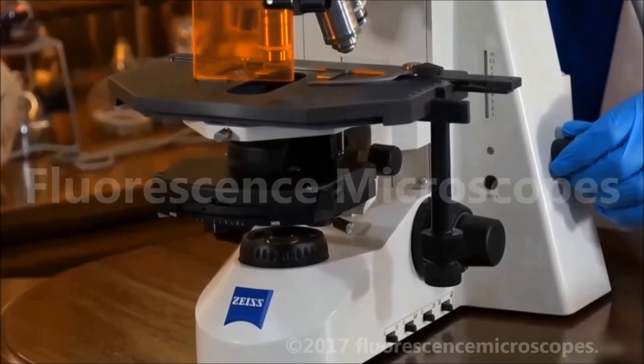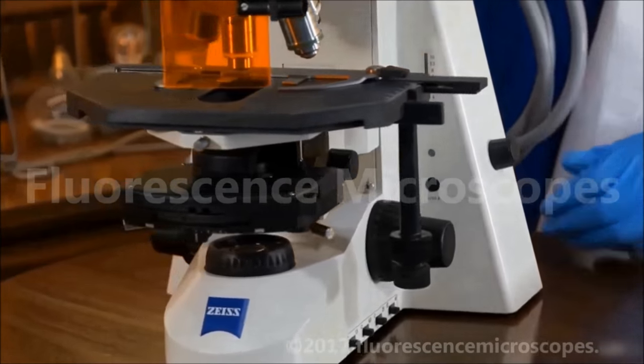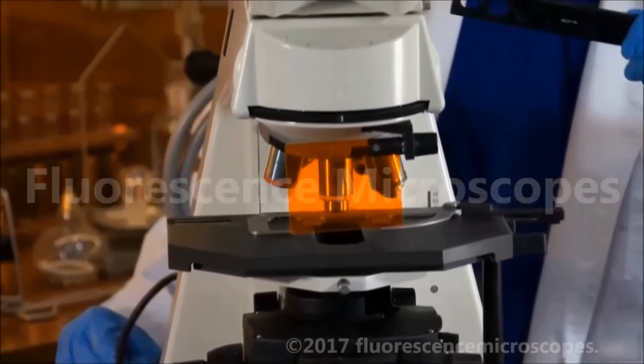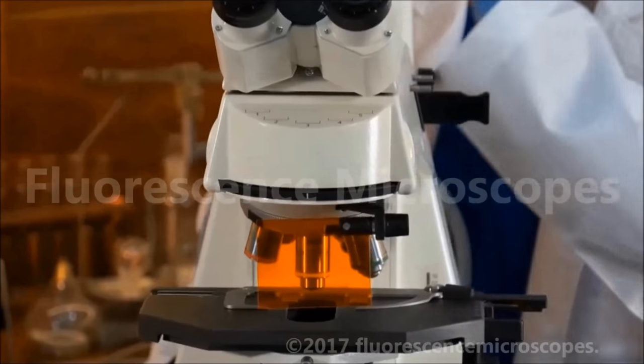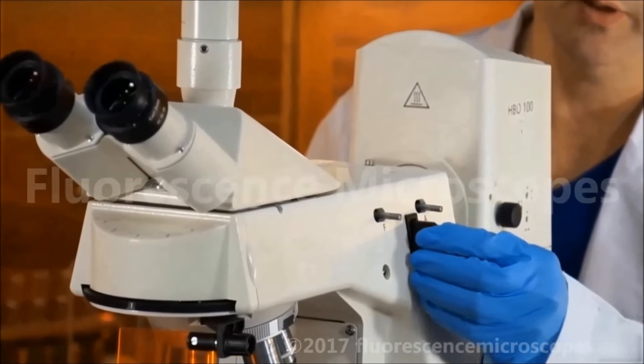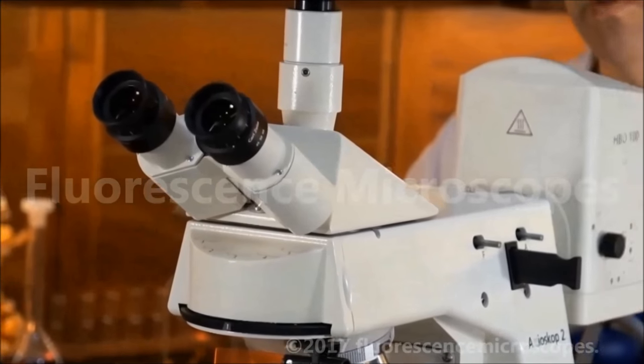This is your variable intensity on your halogen illumination. You have a filter slider. This acts as a shutter for your HBO lamp, and it also has a filter that you would normally use when you're using your HBO lamp.